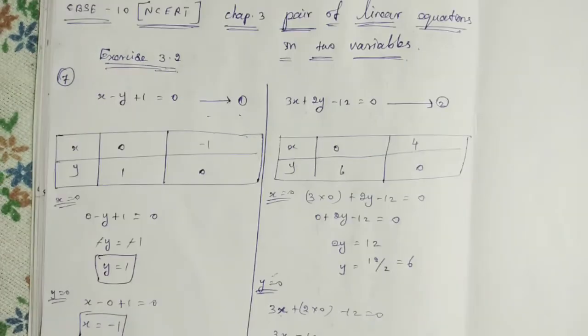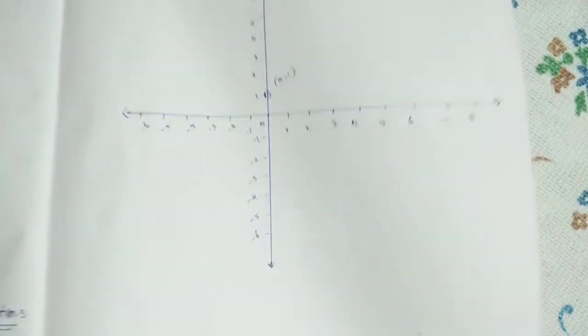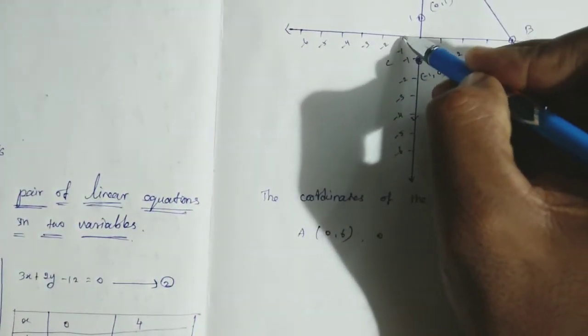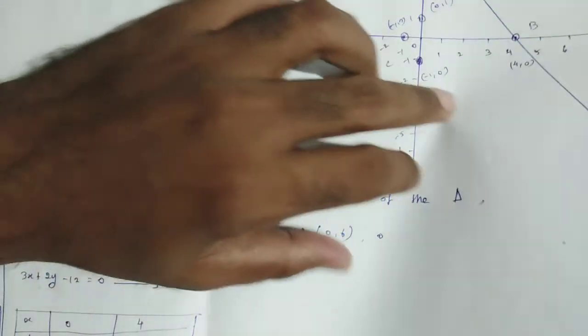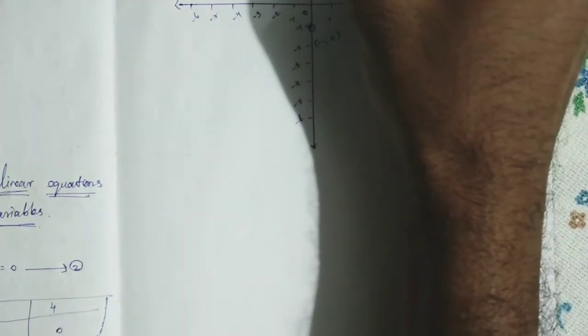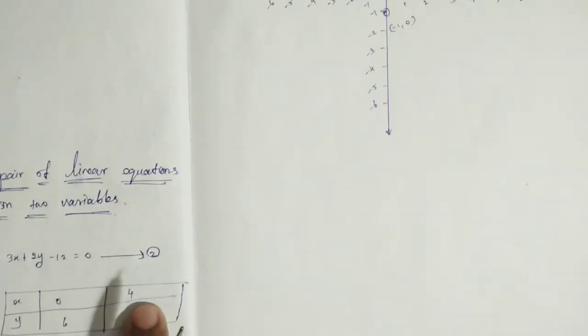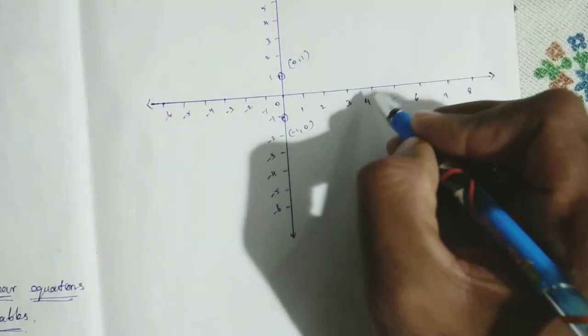Now we plot the points on the graph. For equation 1, the first point is (0, 1) on the y-axis, and the second point is (-1, 0). We join these two points. For equation 2, the first point is (0, 6) on the y-axis, and the second point is (4, 0). We join these two points as well.